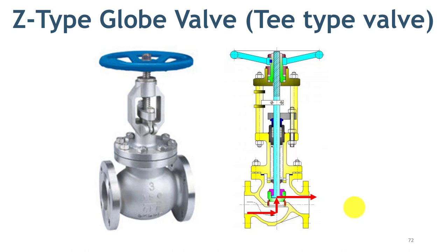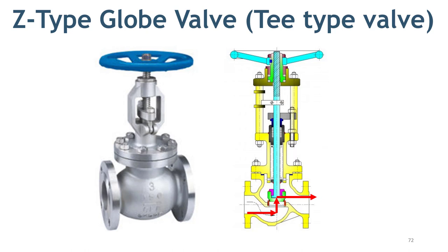You can see that the flow entering the valve has a direct hit on the seat, and the flow is also changing direction while flowing through the valve. These two factors make this valve ideal for high throttling services, and the same two factors make this valve undesirable for pressure-sensitive services. Globe valves used for pressure control are also known as throttling valves and have a specially designed trim to handle the differential pressure.